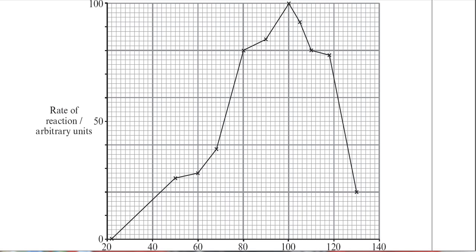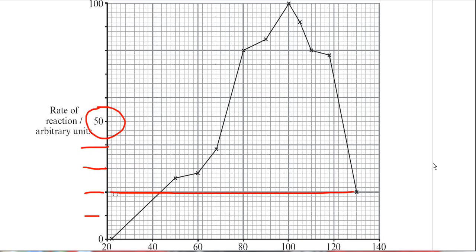I've just realised I read the y-axis scale wrong earlier. The scale actually goes up in 10s: 10, 20, 30, 40, 50 — so the actual drop in rate goes down to 20, not 30. Don't make mistakes like that in an exam — you do need to be able to read off the axes accurately. So from 100°C to 130°C, the rate of reaction has dropped from 100 down to 20.